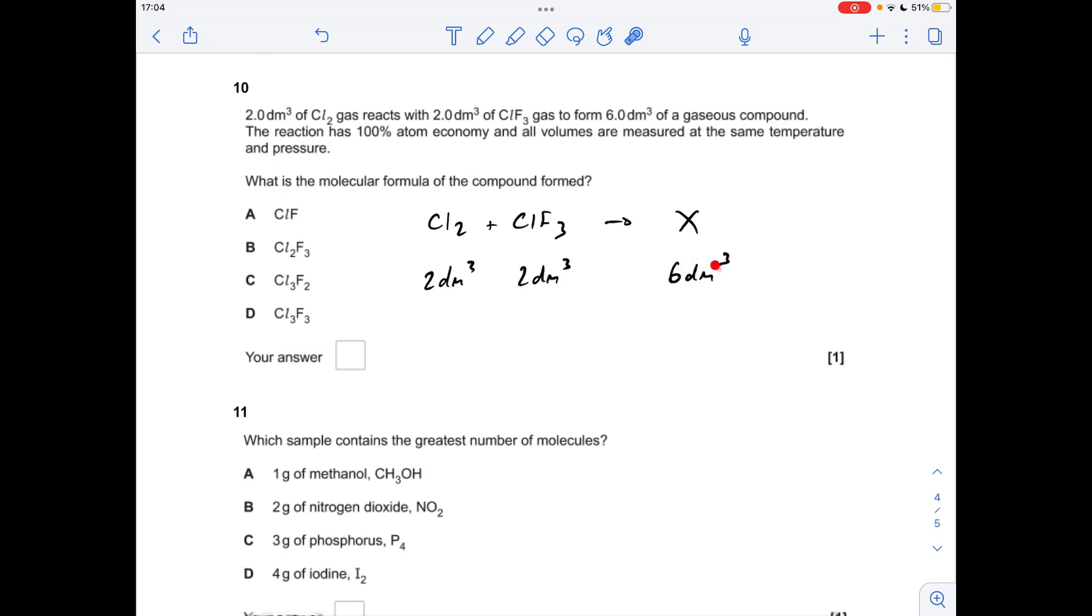But they're making 3 times as many moles of the gaseous compound which I've called X. So basically we need 3 there. So to make this work in terms of balancing, X must have the formula of ClF, because you've got 3 Cls and 3 Fs when you add all the atoms together, so the answer was A.